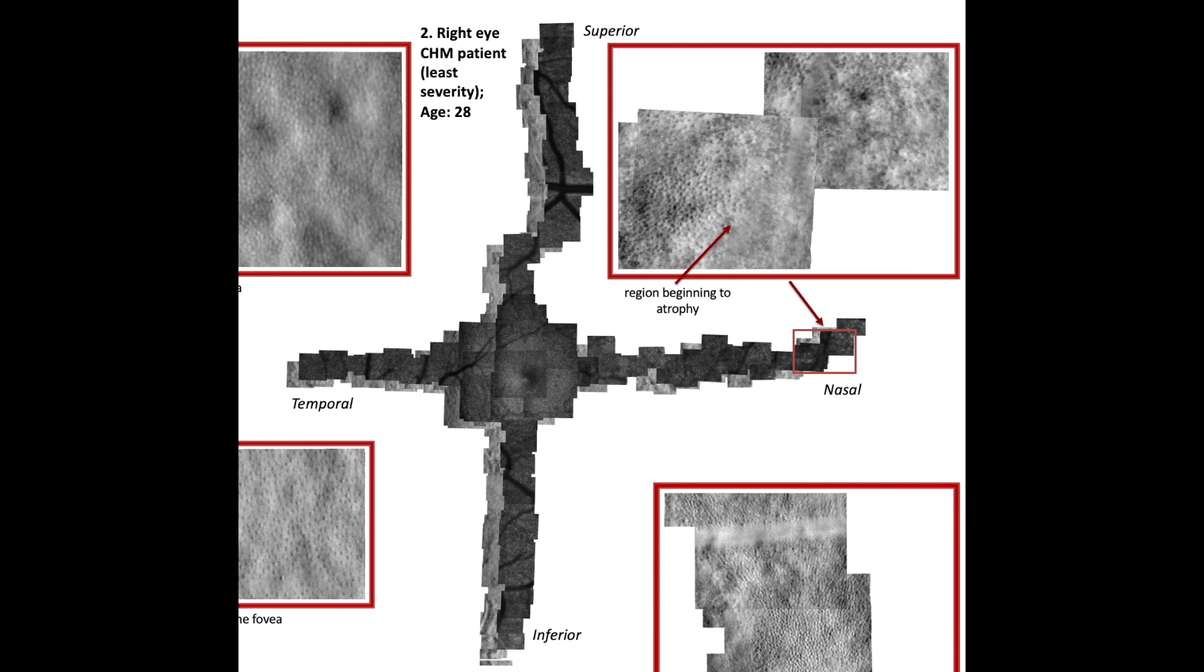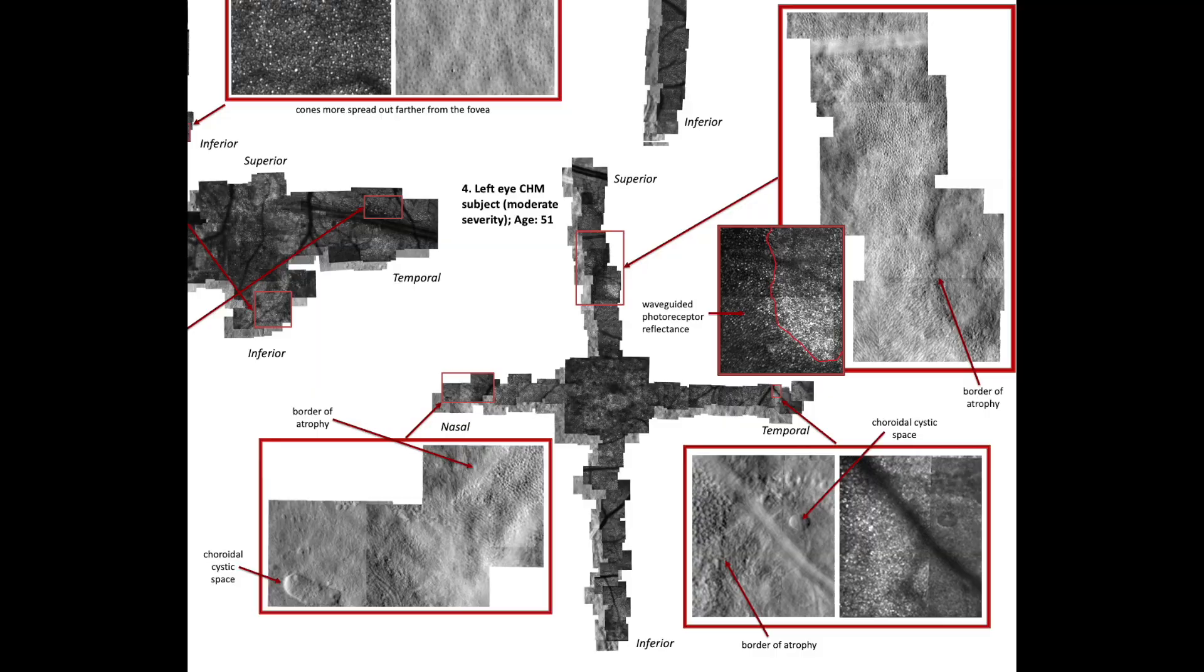One montage over to the right, you can see that the cone pattern of this young CHM patient is comparable to that of the normal sighted subject. In the nasal arm, however, you can see that the bottom half of the magnified image is beginning to atrophy, a clear sign of the CHM phenotype beginning to register.